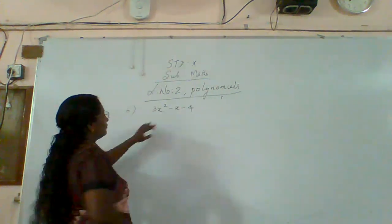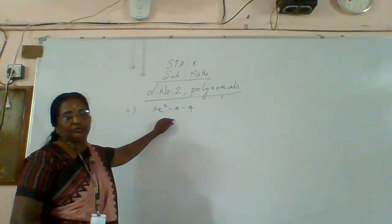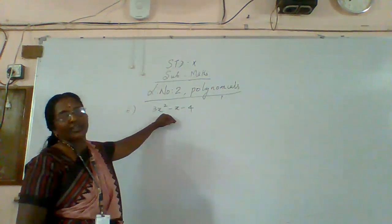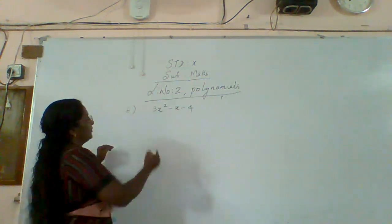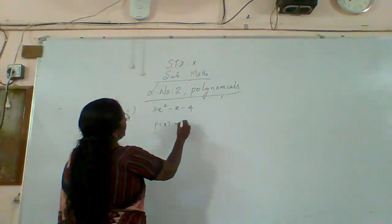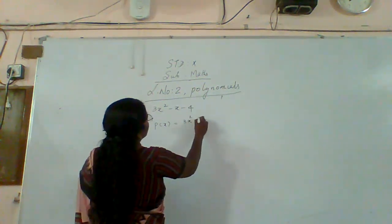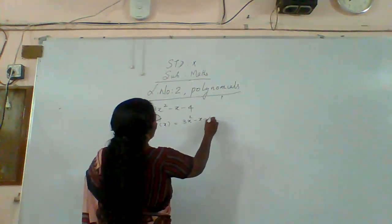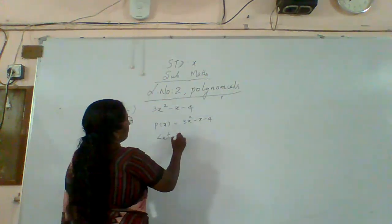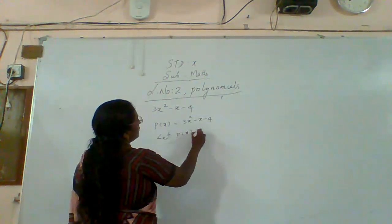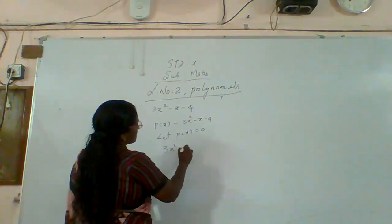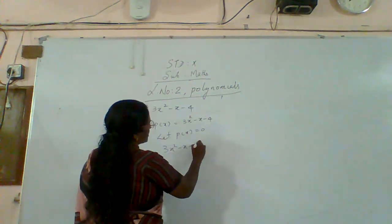First we have to find the zeros. For finding the zeros, let P of x equal to zero. P of x is equal to three x square minus x minus four equal to zero.